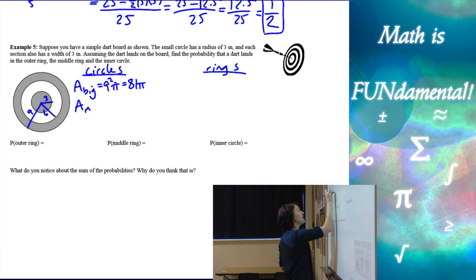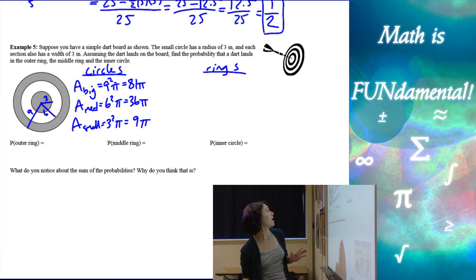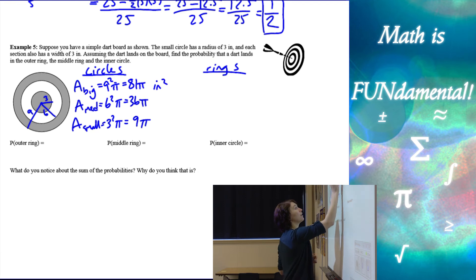Area of my medium circle is going to be 6 squared pi, so 36 pi. And the area of our small circle is 3 squared pi, which is 9 pi. And of course we have inches squared on each one of these.